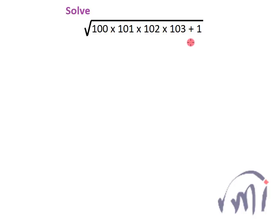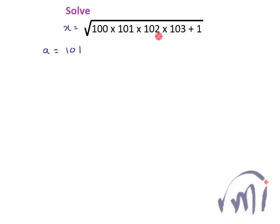So is there any shortcut? It will definitely avoid the handling of big numbers. Let me assume that this is equal to x, and if I assume 101 as a, then 100 can be written as a minus 1, 102 as a plus 1, and 103 as a plus 2, then plus 1.